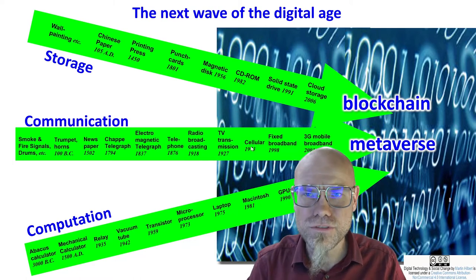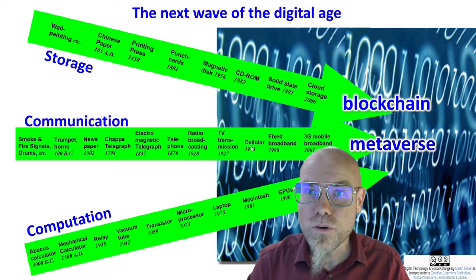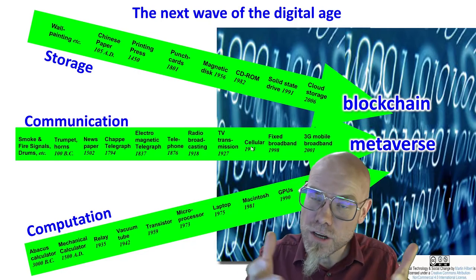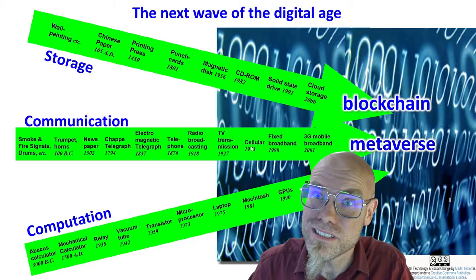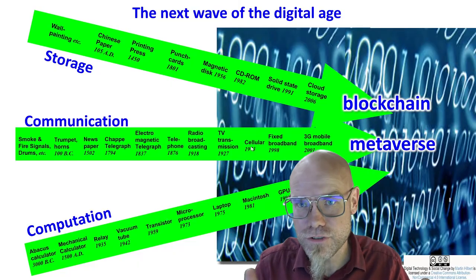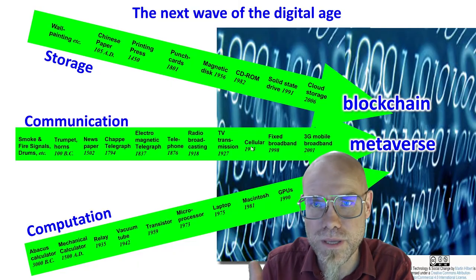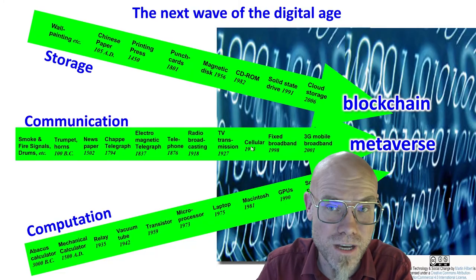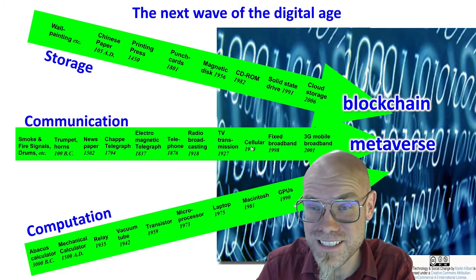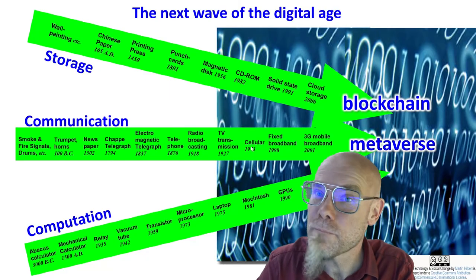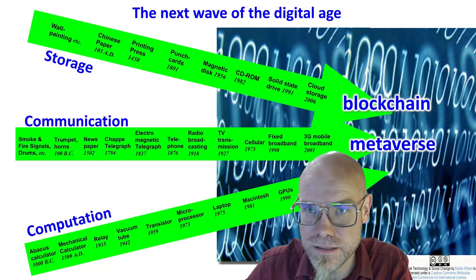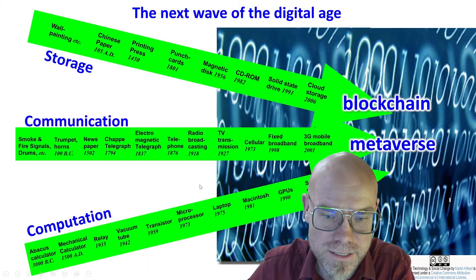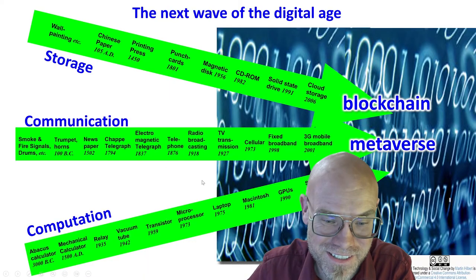...why do we continue to stare at these two-dimensional books or screens? Why don't we take advantage of all this machinery that we have and adapt to three-dimensional digital environments? So that's the natural way to go. And I think we will get there. There are a lot of hardware challenges and software challenges, so it might not go as fast as some people think it might go. But I think it makes sense that eventually we should represent information in a three-dimensional space. Or maybe even higher spaces.